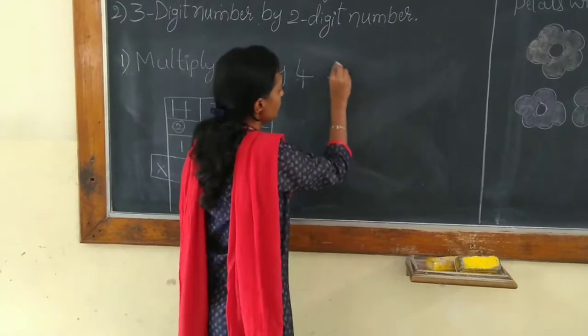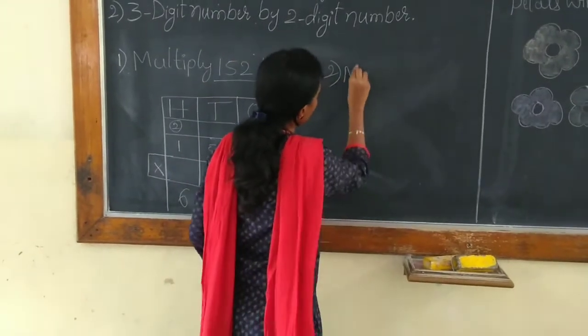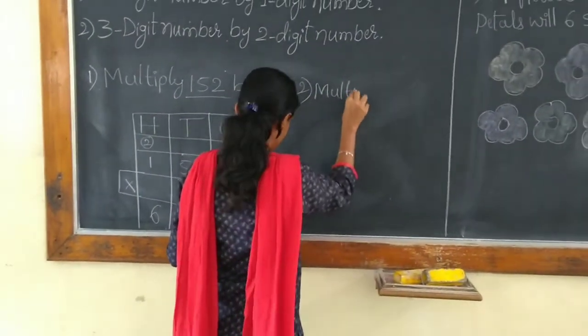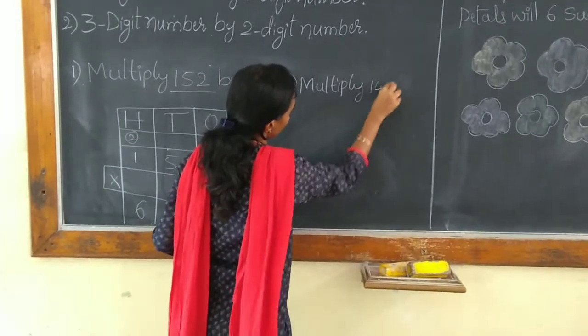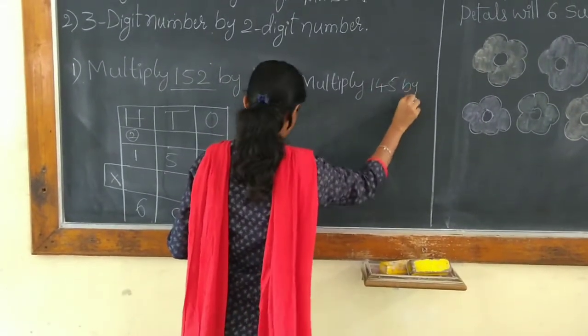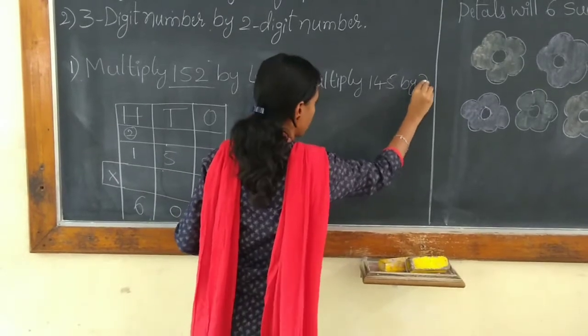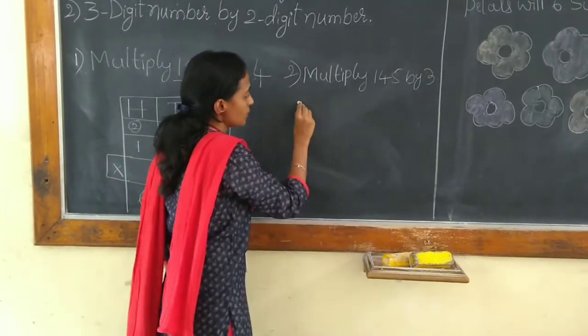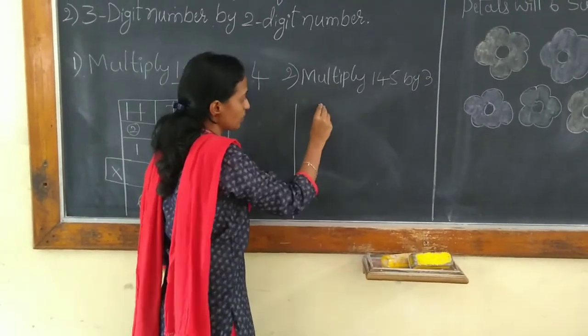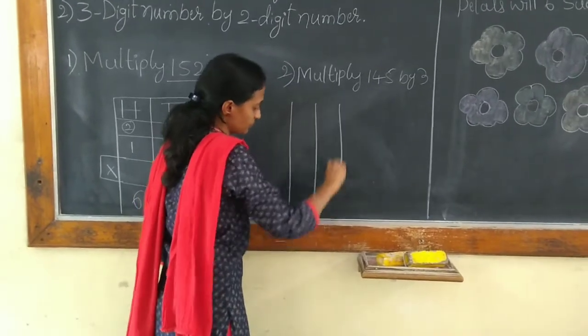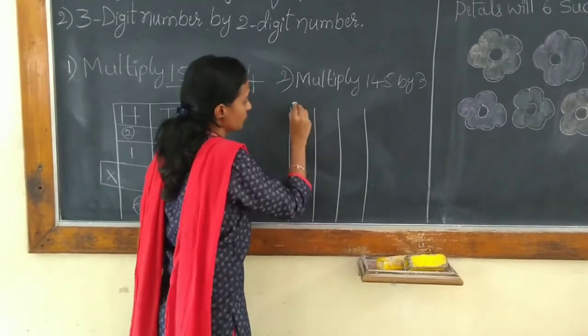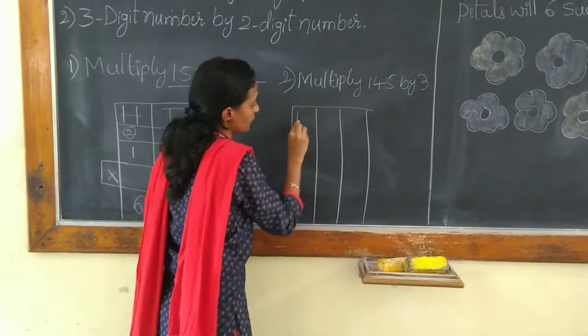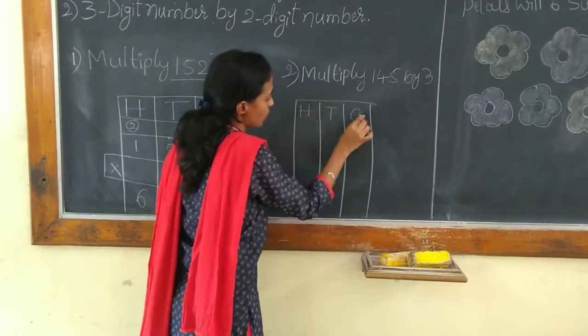One more example. So, we will multiply 145 by 3. First we need to draw the table.